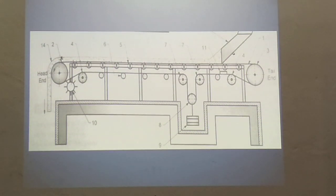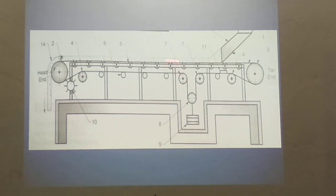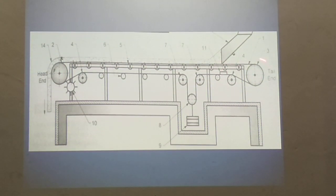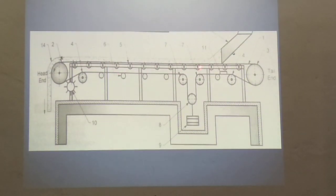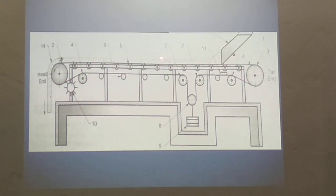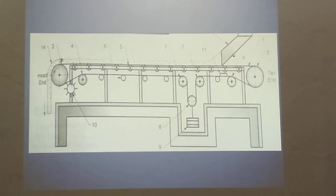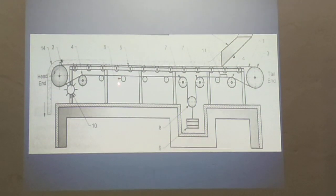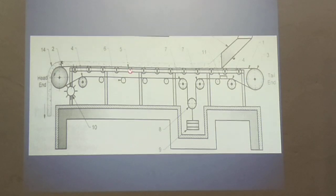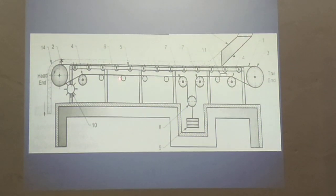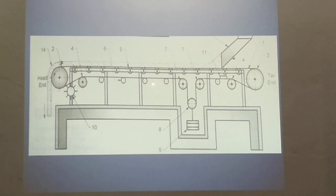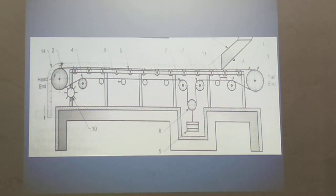Next are the idlers. Idlers are used to support the belt. As you know, the distance between the head and tail pulley can be several hundred meters, so idlers are used to support the belt over such a large distance. Idlers are of two types: carrying run idler and return run idler. The carrying run idler supports both the belt and the material, whereas the return run idler only supports the belt. Please remember this.